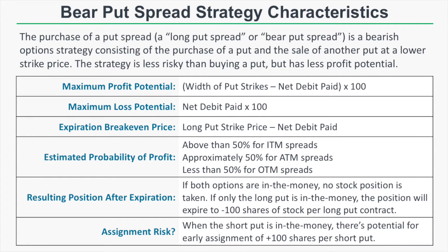The purchase of a put spread is also referred to as a long put spread, a put debit spread, or a bear put spread. This is a bearish option strategy that consists of purchasing a put while also selling another put option at a lower strike price. Compared to buying a put outright, the bear put spread has less profit potential and less risk, so it's a more conservative strategy and not as aggressive as just buying a put option by itself.